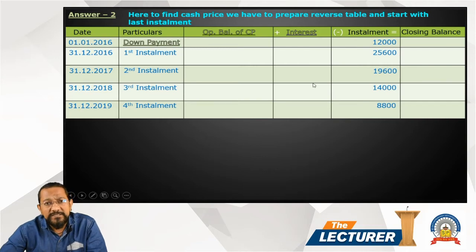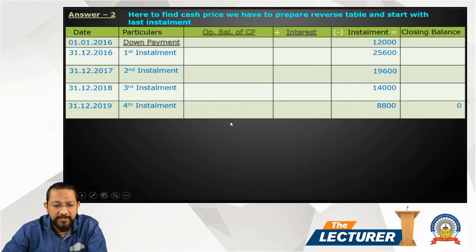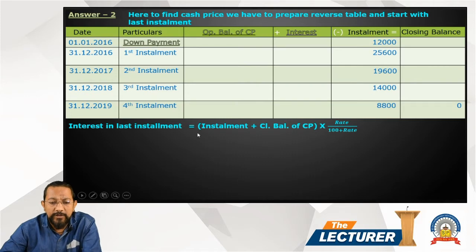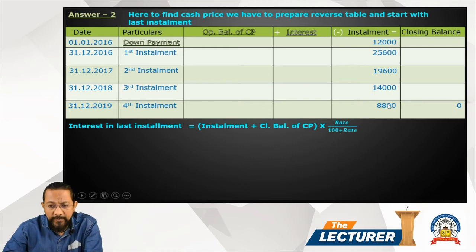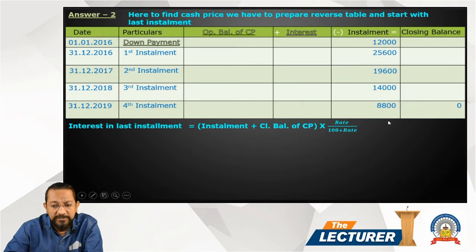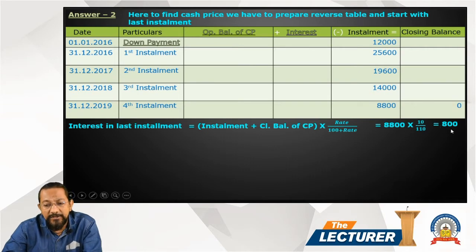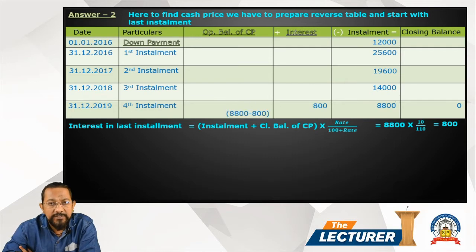Starting with the last installment: Interest equals installment plus closing balance of cash price, multiplied by rate divided by 100 plus rate. So installment is 8,800 and closing balance is zero. 8,800 into 10 divided by 110 gives interest of 800. The opening balance therefore equals 8,800 minus 800, which is 8,000.